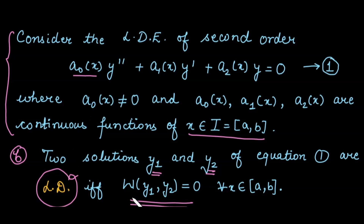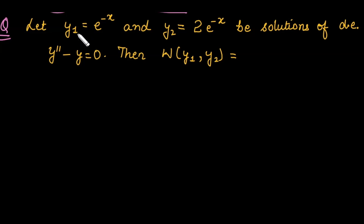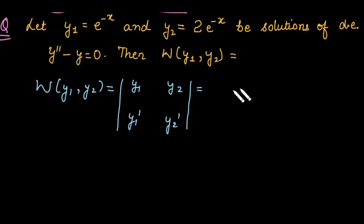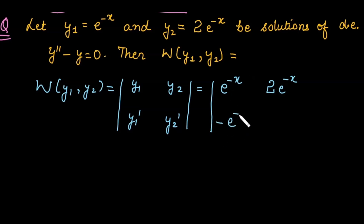Let's understand this with an example. We have two solutions y1 and y2, and we need to evaluate the Wronskian. They are solutions of the differential equation y'' - y = 0. The Wronskian equals the determinant with y1 = e^(-x) and y2 = 2e^(-x) in the first row, and their derivatives -e^(-x) and -2e^(-x) in the second row.